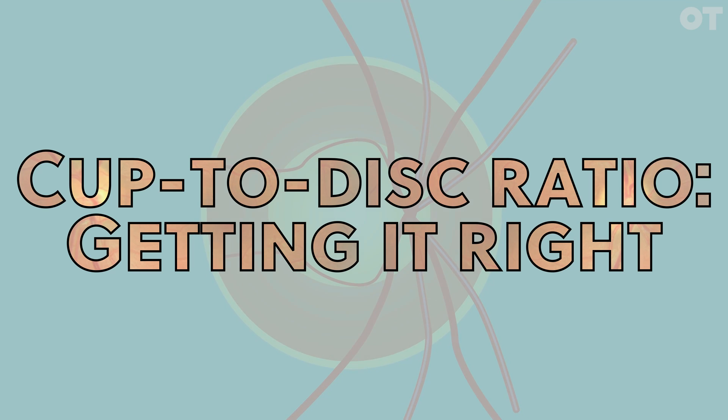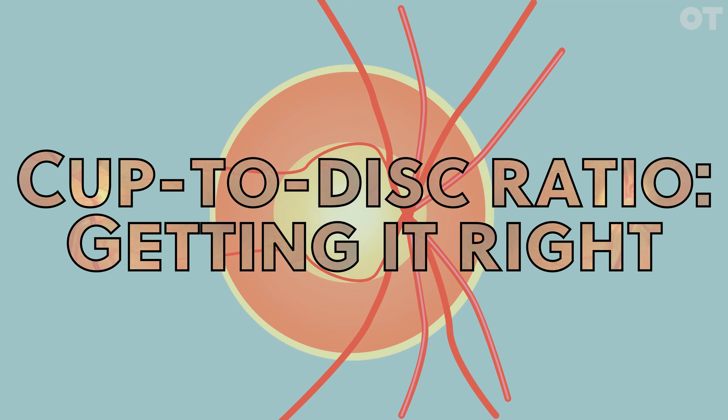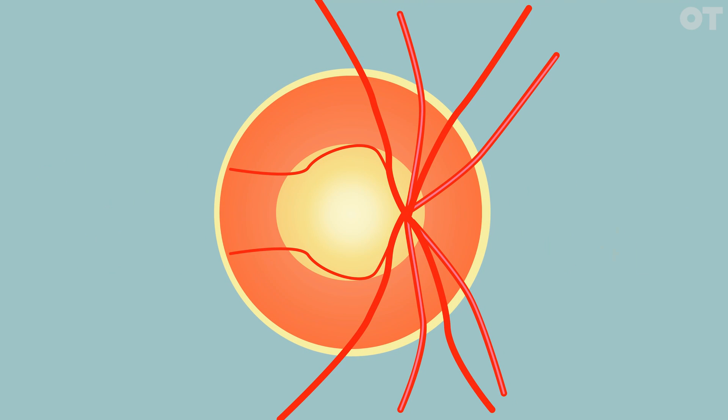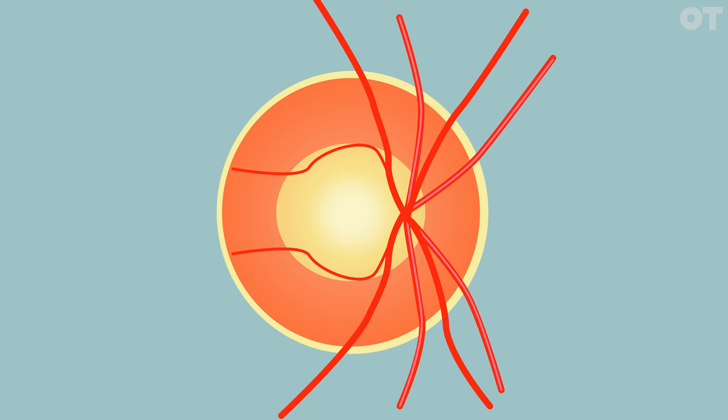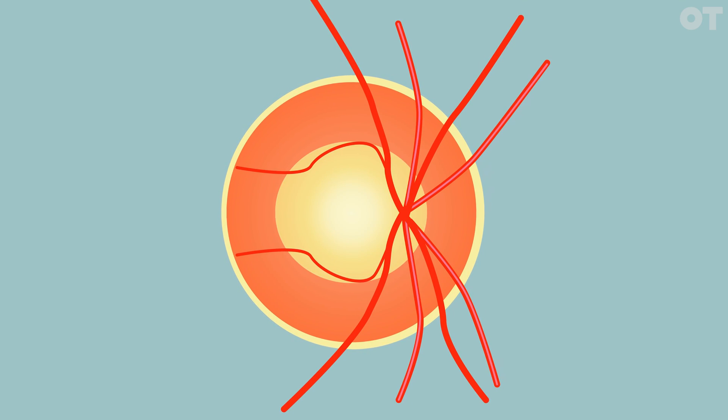Getting an accurate cup-to-disc ratio is very useful for assessing a patient's risk of pathology, or for evaluating whether their pathology is progressing, especially in glaucoma.